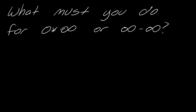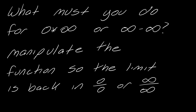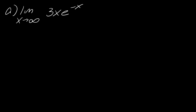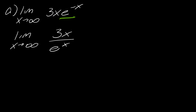What must you do when you get 0 times infinity or infinity minus infinity? In those cases, you need to manipulate the function so the limit is back in 0/0 or ∞/∞ form. For example: the limit as x approaches infinity of 3x times e^(−x). The 3x approaches infinity while e^(−x) approaches 0, giving a 0 times infinity form. Since e^(−x) has a negative exponent, we can easily rewrite this as 3x over e^x.